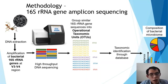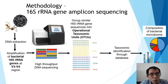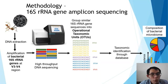The PCR products were then used for high-throughput DNA sequencing, and the sequences obtained were grouped into operational taxonomic units, or OTUs. These OTUs were then taxonomically identified through database matching to reveal the composition of the bacterial microbiome in the weaver ant.